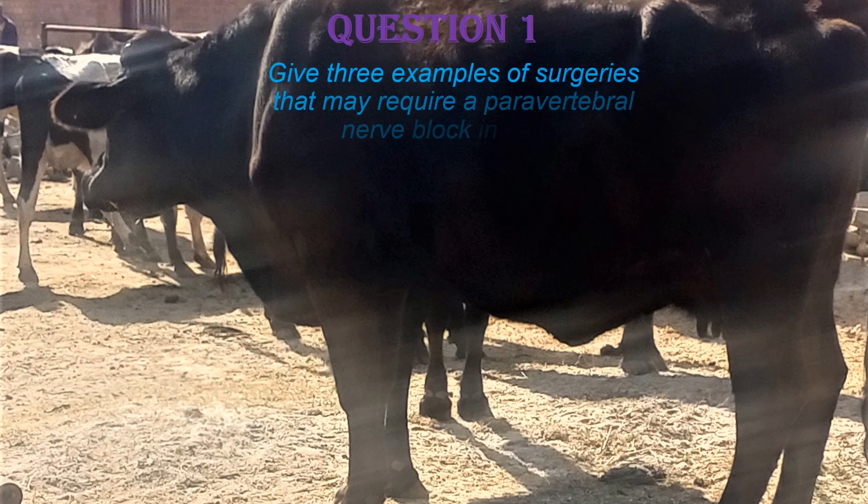Question one: give three examples of surgeries that may require a paravertebral nerve block in cattle. The answer is: